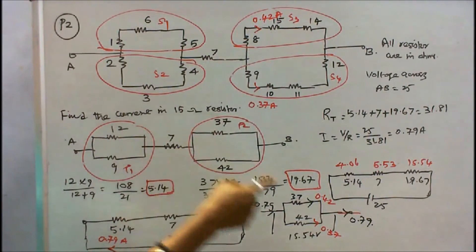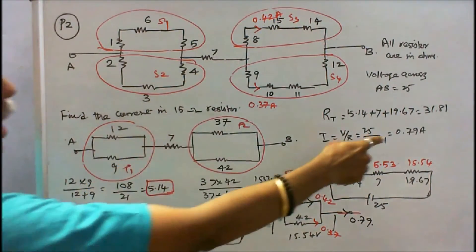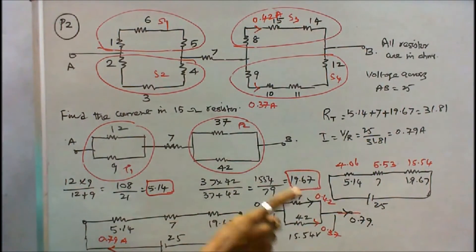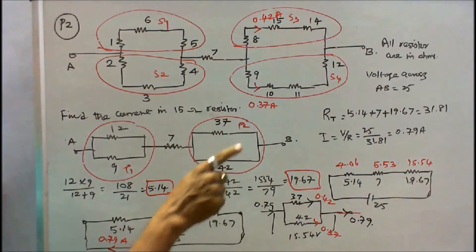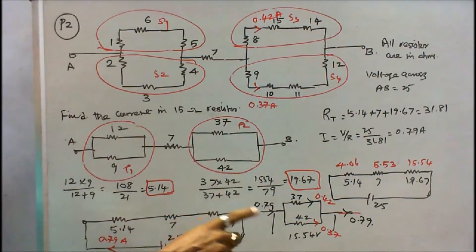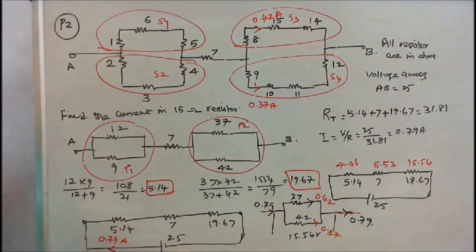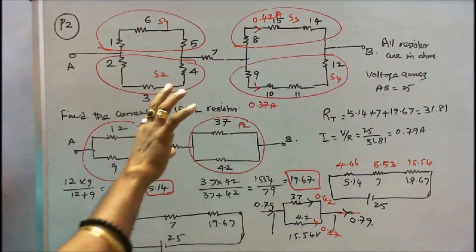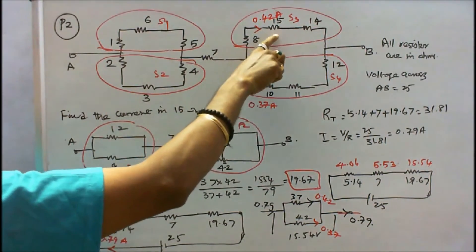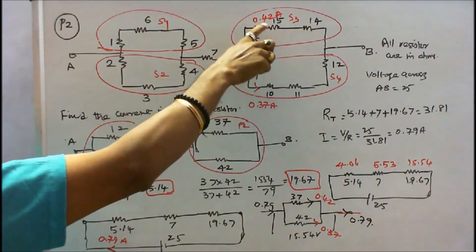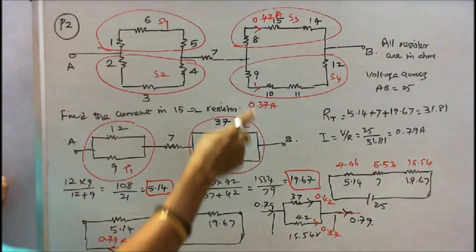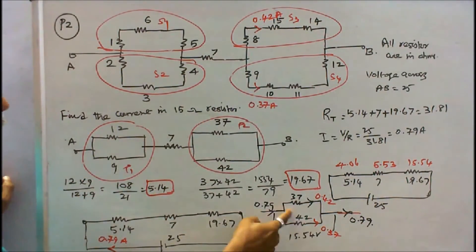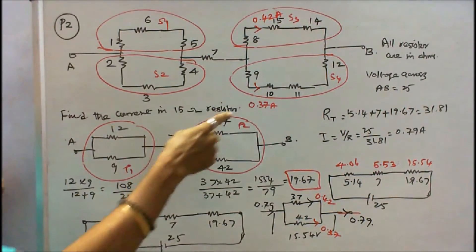Redrawing: the 37Ω and 42Ω branches are in parallel, so the voltage across both is constant at 15.54V. Current into the junction is 0.79A, and the same must leave. I = V/R: 15.54 / 37 = 0.42 amps through the 37Ω branch. Since 8Ω, 15Ω, and 14Ω are in series, the current through the 15Ω resistance is 0.42 amps. Current through the 42Ω branch: 15.54 / 42 = 0.37 amps.